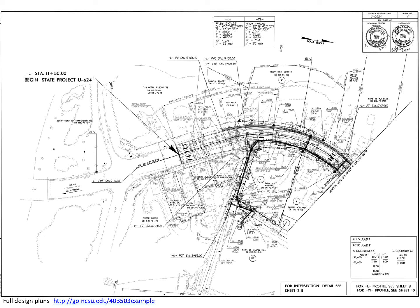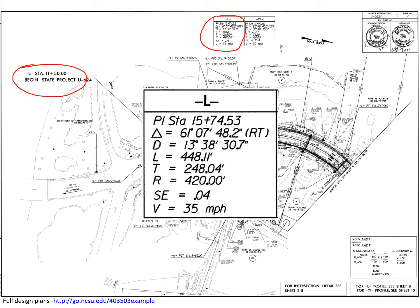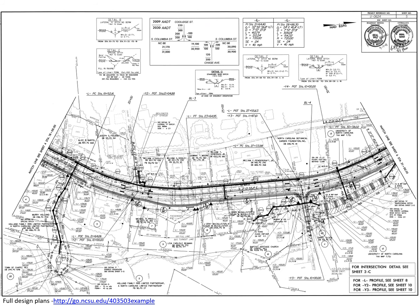Looking in more detail at the project, we can see the beginning station along the L line — that's the main line of the project. Zooming into the curve details, we recognize the numbers calculated in our example when working through the first row of the table. We see the super elevation of 4% and a design speed of 35 miles per hour. That's the first sheet for the horizontal alignment. Sheet number two matches with sheet four ending at station 18, and the other match line is sheet six at station 31.